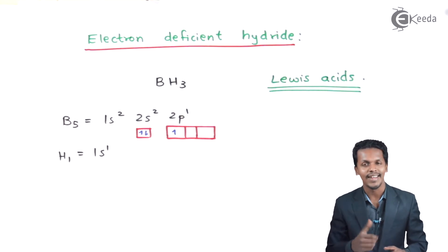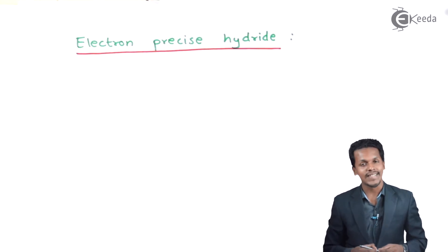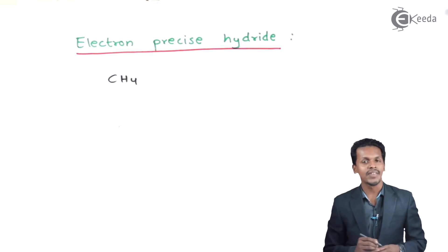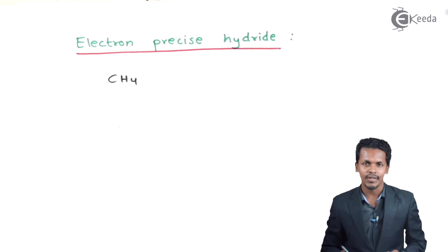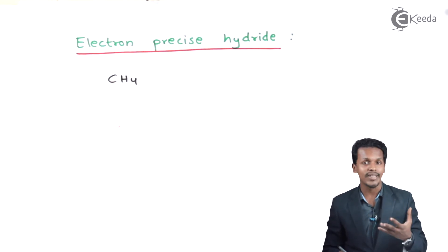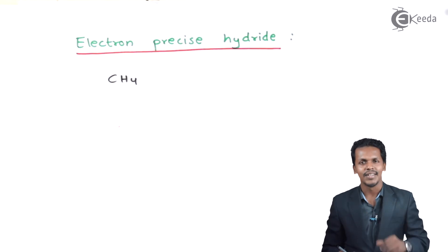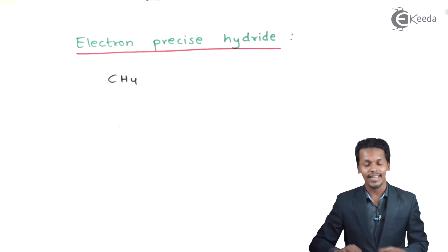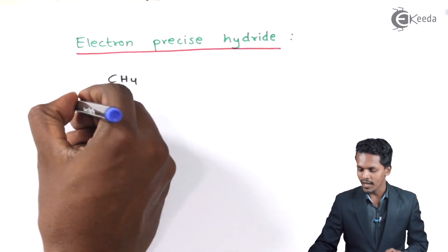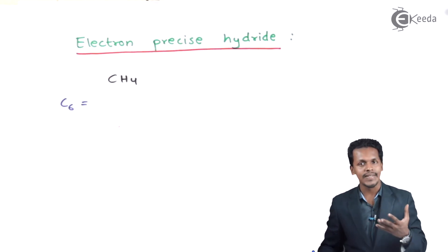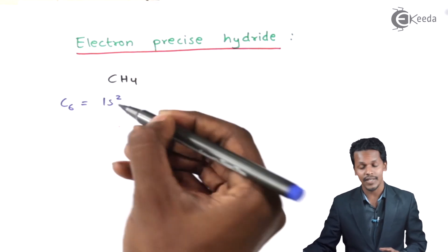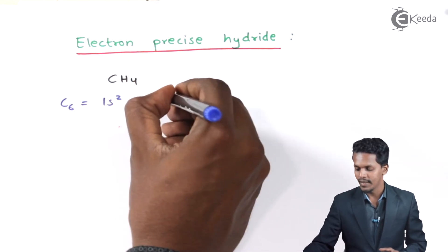Now let us move to electron-precise hydrides. An example is CH4. Carbon belongs to the P block. Its atomic number is 6, and the electronic configuration is 1s², 2s², 2p².